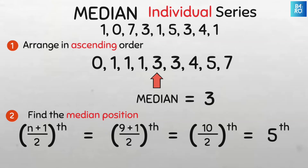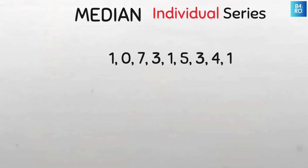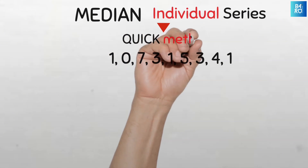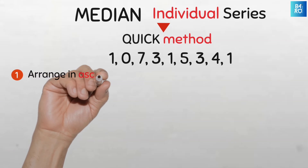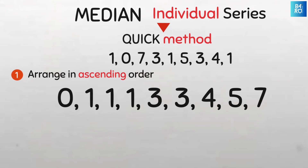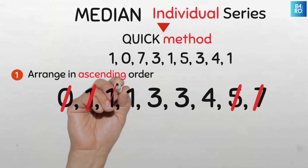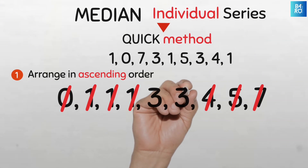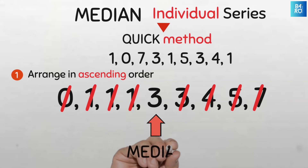We can also do this using another method if the data set is not too large. I won't advise you to use this second method if you have more than 20 data points. I call this the quick method. Since the median is the middle number, half of the data values will lie below and the other half above the median. So we can cancel out from each end to find which data value is left in the middle. Cancel the first and the last, then the second and second-to-last, and continue until our middle number is 3 — that's our median.